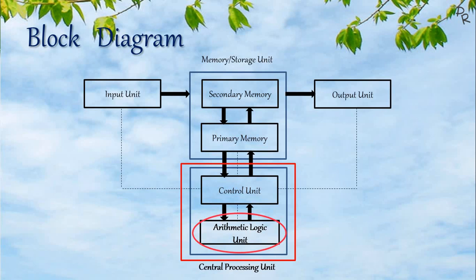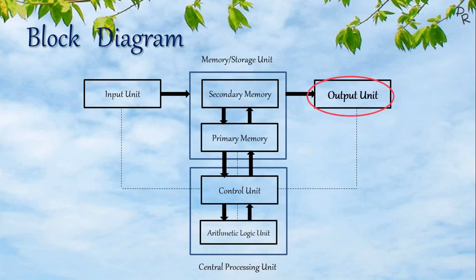The CPU does not access data from the secondary memory. After processing is done, the result is sent back to the memory unit and then it is displayed to the user as output whenever required.